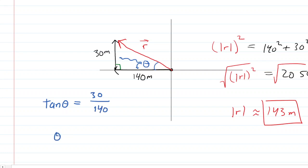Now remember, to solve for theta, you actually need to do the inverse tangent of that 30 to 140 ratio. So we just pick up our calculators again, and we punch in the right hand side, and we get about 12 degrees.